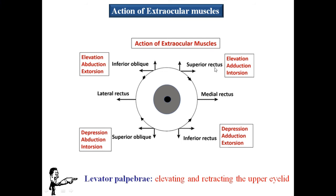This chart shows the actions of the extraocular muscles: superior oblique, inferior oblique, superior rectus, inferior rectus, medial rectus, and lateral rectus. These represent the common actions of the oculomotor, trochlear, and abducent nerves. The levator palpebrae superioris assists in elevating and retracting the upper eyelid and also contributes to facial expression.